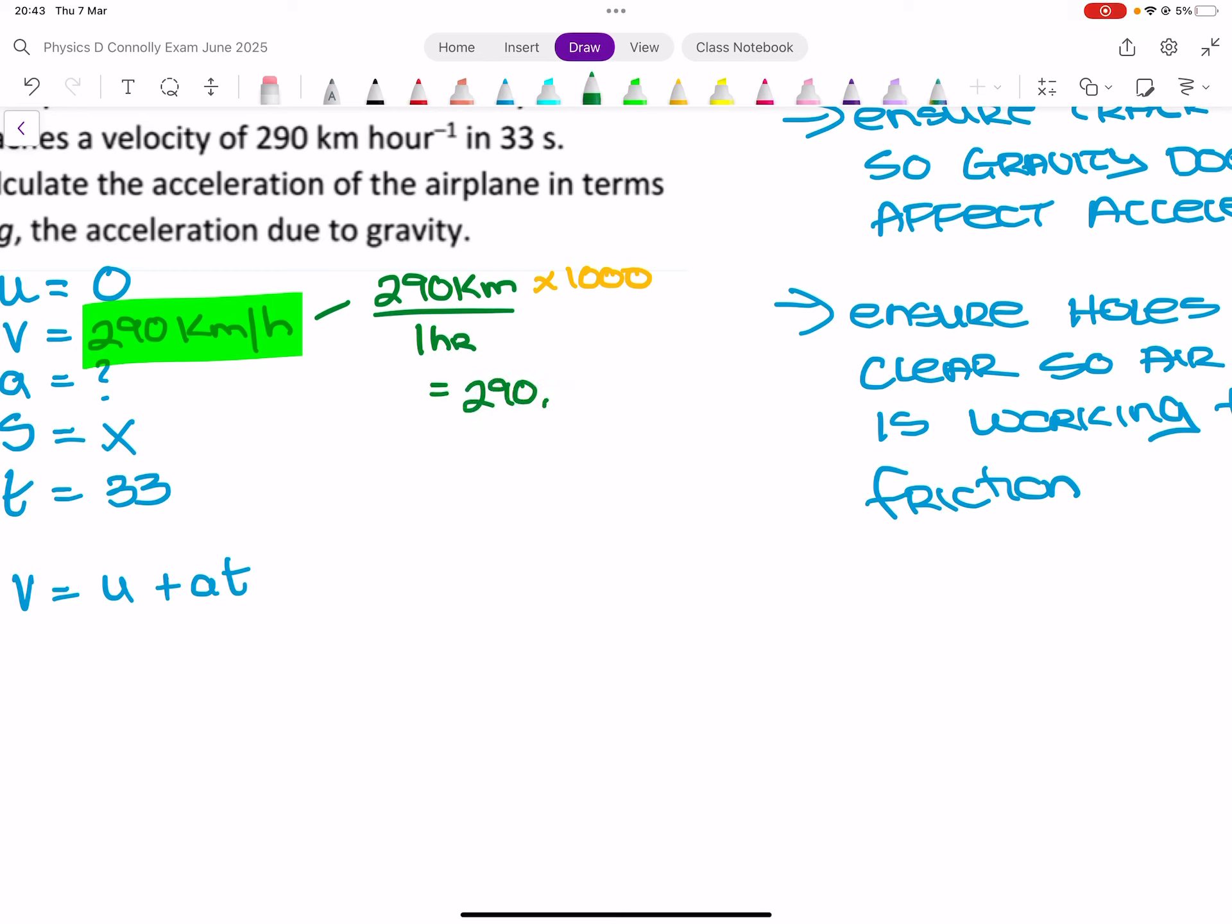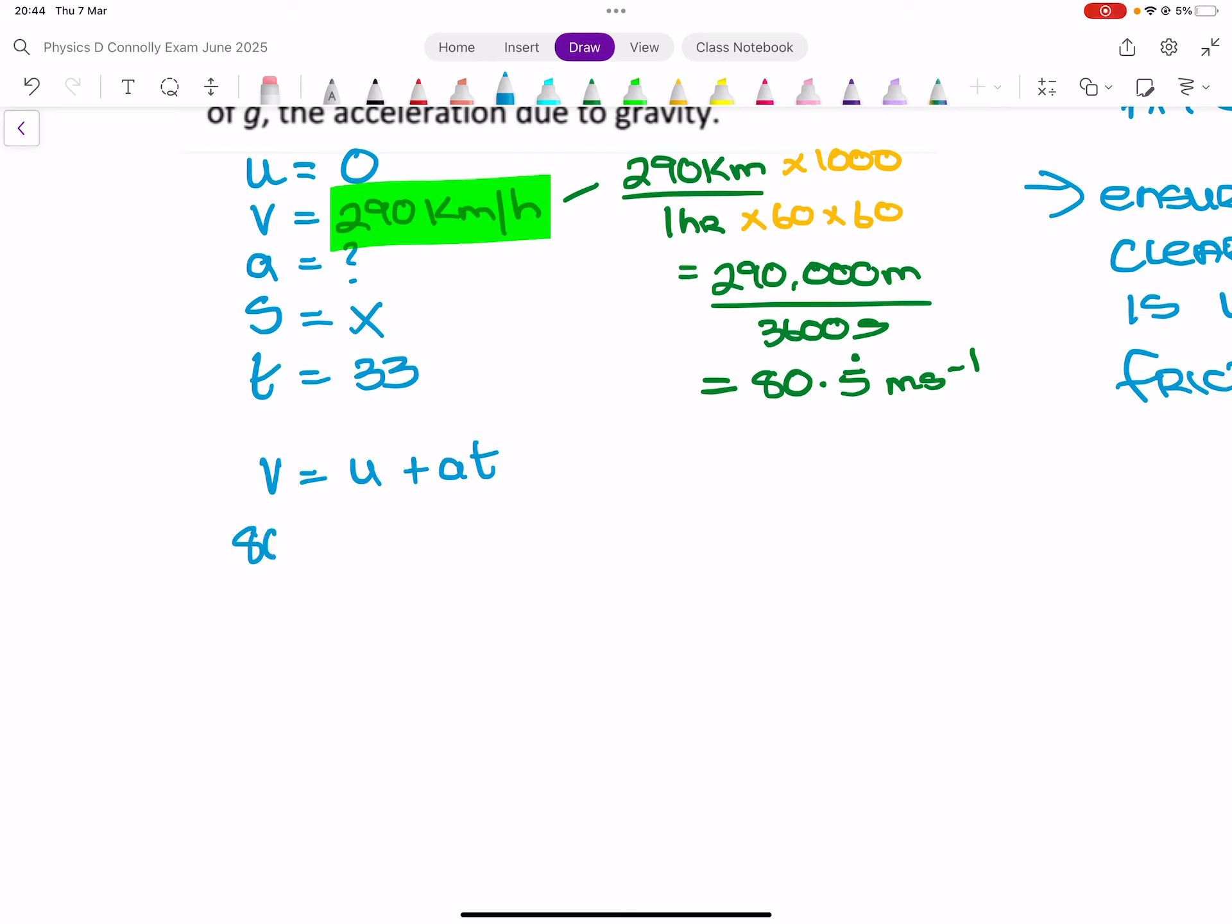So, we do 290 kilometers in one hour. Convert kilometers into meters. You multiply by 1000. So, that is 290,000 meters. And then to convert hours into seconds, it's by 60, it's by 60, by 60. So, that is 3,600 seconds. And then just divide the numbers. So, 290,000 divided by 60, multiplied by 60. 80.5 recurring meters per second is what I'm getting. So, this is 80.5 recurring equals 0 plus A times 33. So, 80.5 recurring equals 33 A. And then I can divide by 33 on both sides. So, I get A equals 2.44.